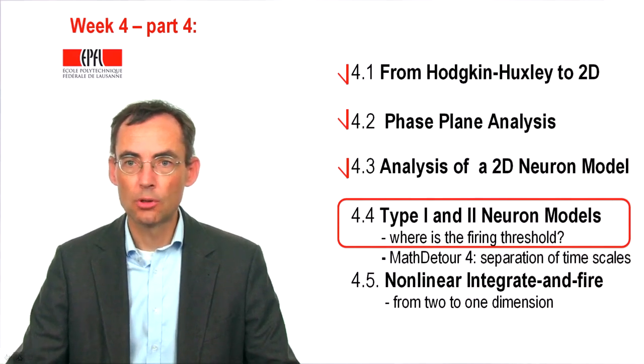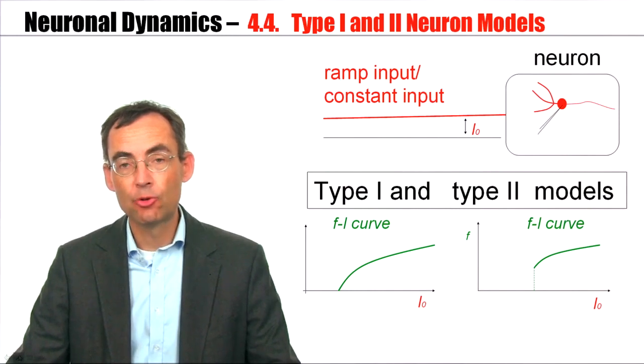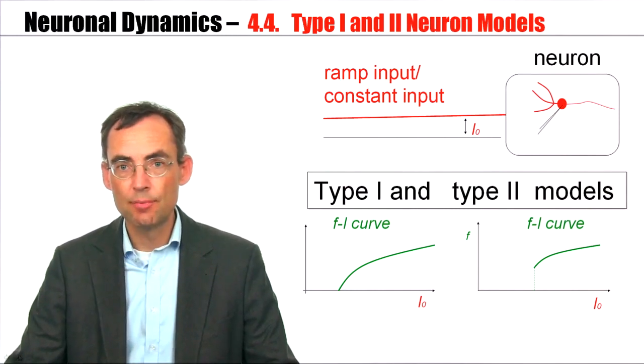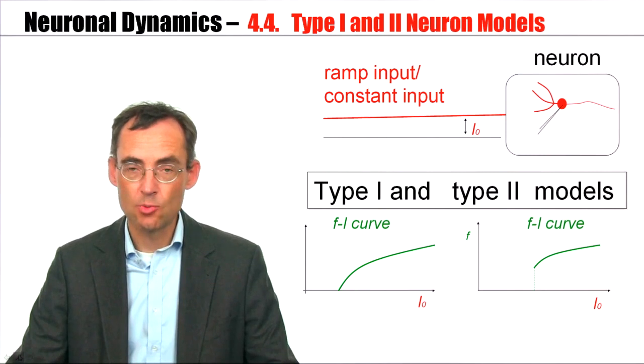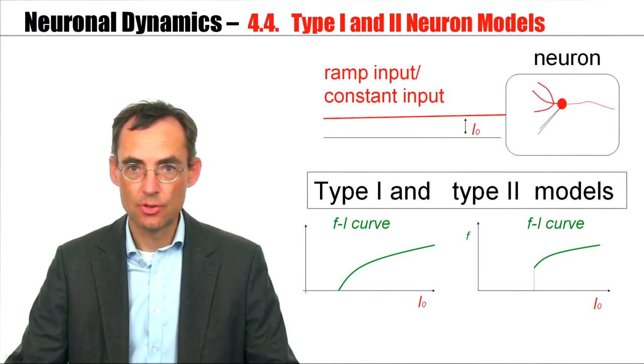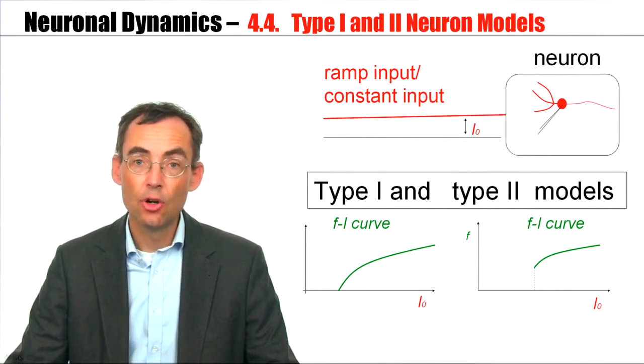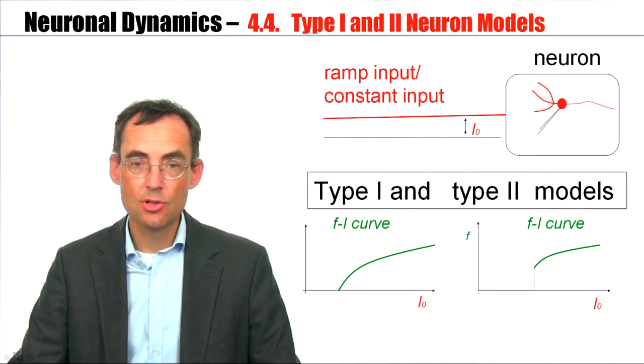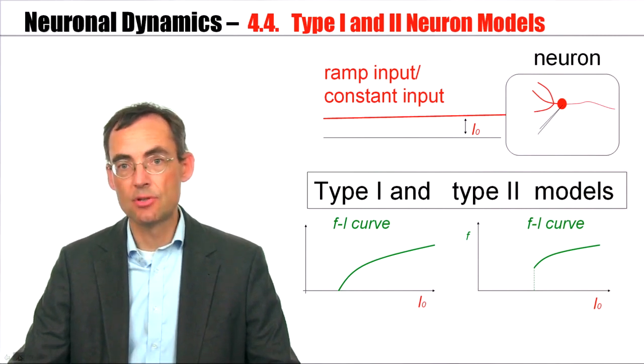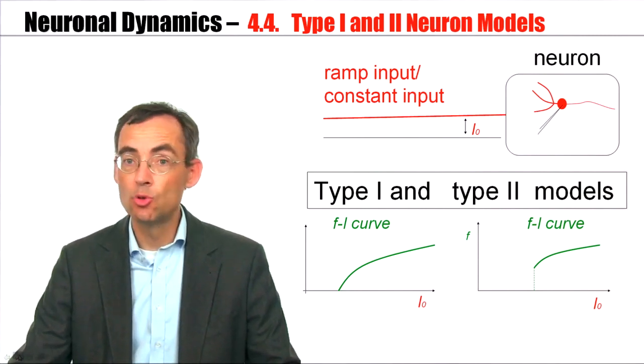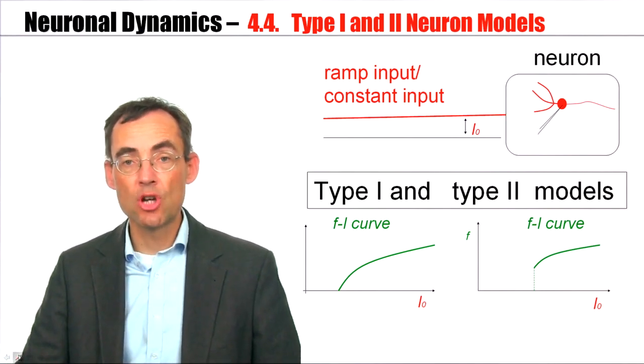Welcome to Part 4 of Week 4. Biologists have made for a long time the distinction between continuous F-I curves, called Type 1 or Class 1, and discontinuous F-I curves, called Type 2 or Class 2. In fact, Hodgkin and Huxley introduced this distinction. But the question arises whether there are specific biological processes that make the difference between a Type 1 or Type 2 model, or whether we can understand this difference on some more general mathematical grounds.